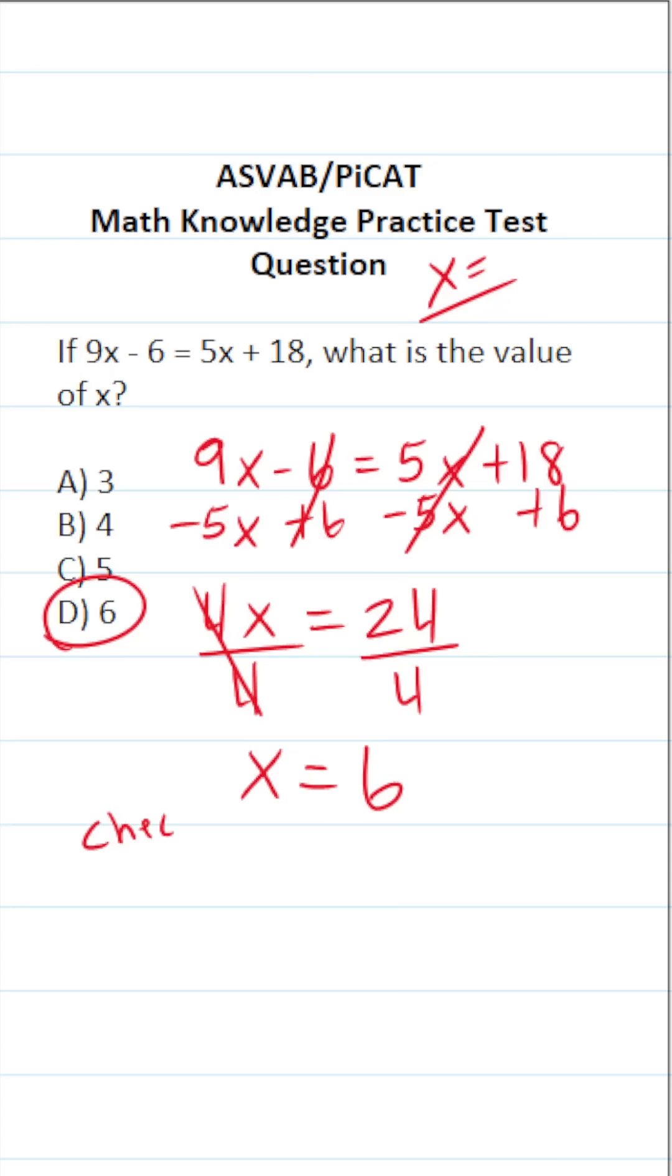Of course, on test day, it may be a good idea to check your work very quickly. In this case, we know x equals 6. So let's go ahead and take 6 and plug it into x in our original equation. And if it makes a true statement, we know we did our work correctly. So we're going to plug in 6 here as well as here. So this becomes 9 times 6 minus 6 equals 5 times 6 plus 18.